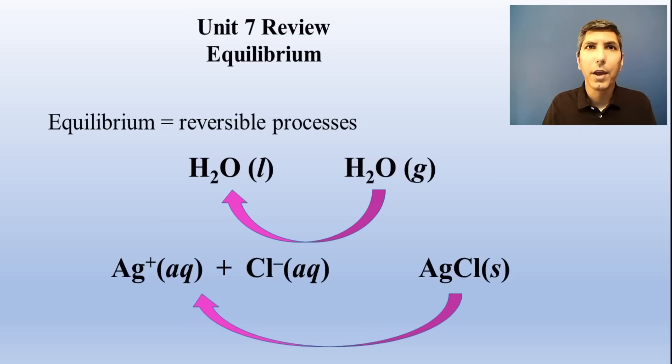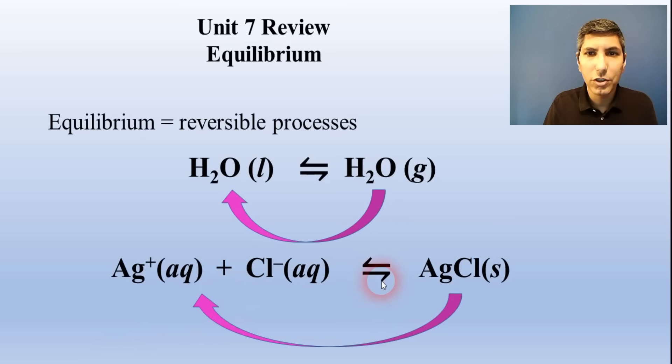Equilibrium refers to reversible processes. Water can be boiled and it can be condensed. Two ions can form a precipitate or that precipitate can dissolve. Reversible processes can attain equilibrium and we use a double-headed arrow to show that reversibility.